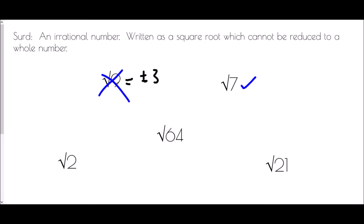Root 64 — is it possible to find the square root of 64? Well the root of 64 is plus or minus 8, and therefore root 64 is not a surd. Root 2 is often one that people mix up because they think 1 times 1 is 2, but it's not — 1 times 1 is 1. There is nothing you can multiply by itself to make 2, therefore root 2 is a surd. And root 21 — well that is between 16 and 25, two square numbers that we do know, so it is not a square number. It is a surd.